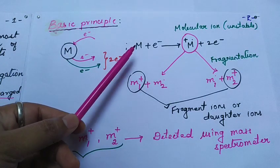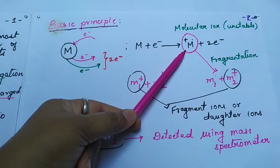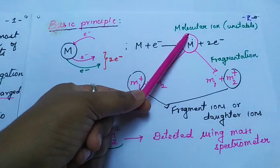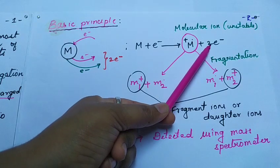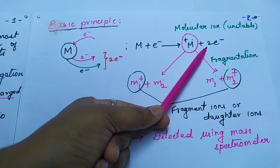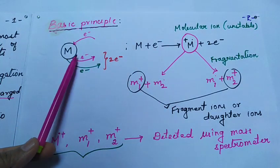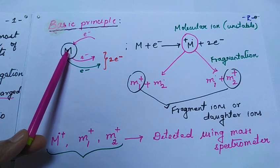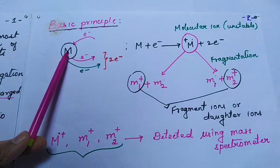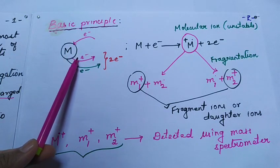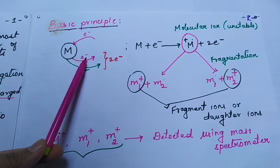According to the principle, the analyte M is bombarded with a beam of electrons that results in formation of the molecular ion, also known as a radical cation, with emission of two electrons. Let us understand why two electrons are emitted. When the analyte is bombarded with the beam of electrons, one electron is emitted from the analyte and the other electron, represented in pink color, is the bombarded electron itself. Therefore, there is emission of two electrons.